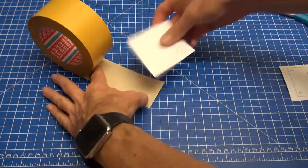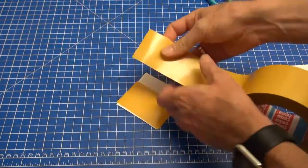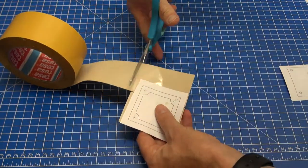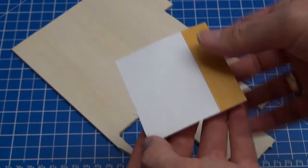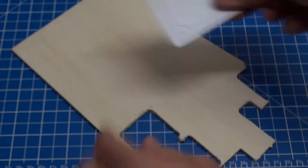Let's start by cutting out the plan for the base frame. Apply some double-sided tape to the back of the paper and attach it to the 3.5mm plywood.